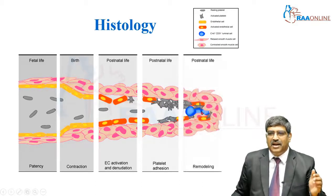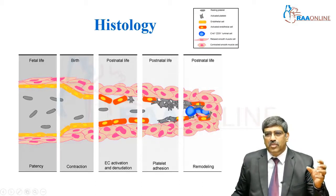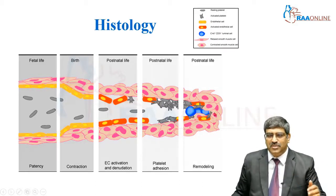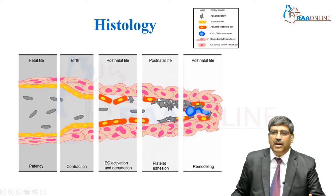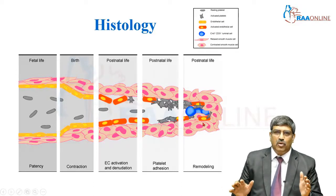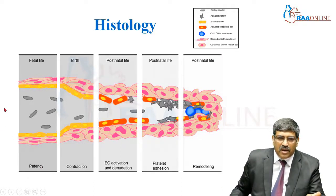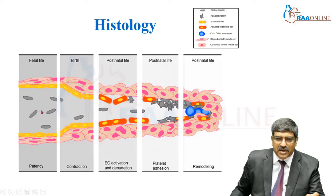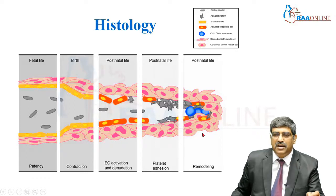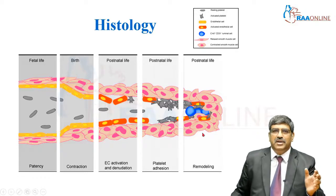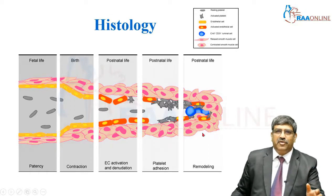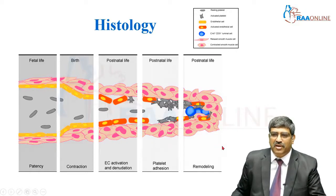Finally, CD31 luminal cells also come in and the total lumen gets occluded. This is how a patent ductus arteriosus becomes obliterated within 24 hours of life.